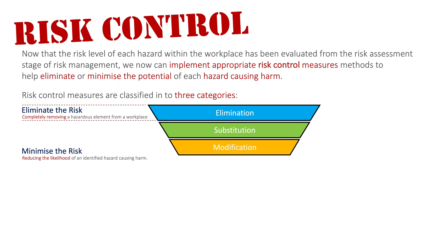The next level is that of modification. We have a hazardous piece of equipment and we modify it in some way so that the risk level of that hazard is reduced. For large machinery, that might mean putting guards or shields on it to protect us from sharp areas and stop us from cutting ourselves. In a computing environment, it might be putting a screen guard over a monitor so it reduces glare on the user's eyes. So we are modifying the equipment in that case.